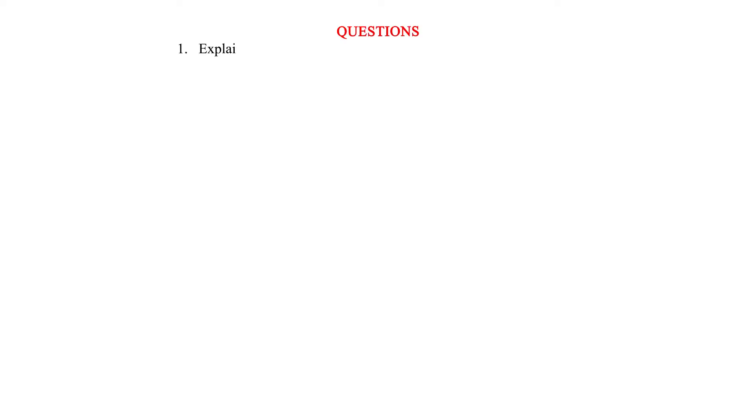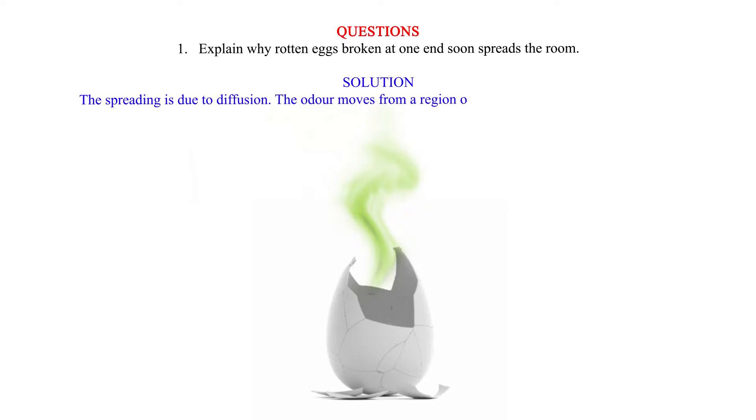Question 1: Explain why rotten eggs broken at one end soon spreads the room. Solution: The spreading is due to diffusion. The odor moves from a region of higher concentration to a region of lower concentration through diffusion.